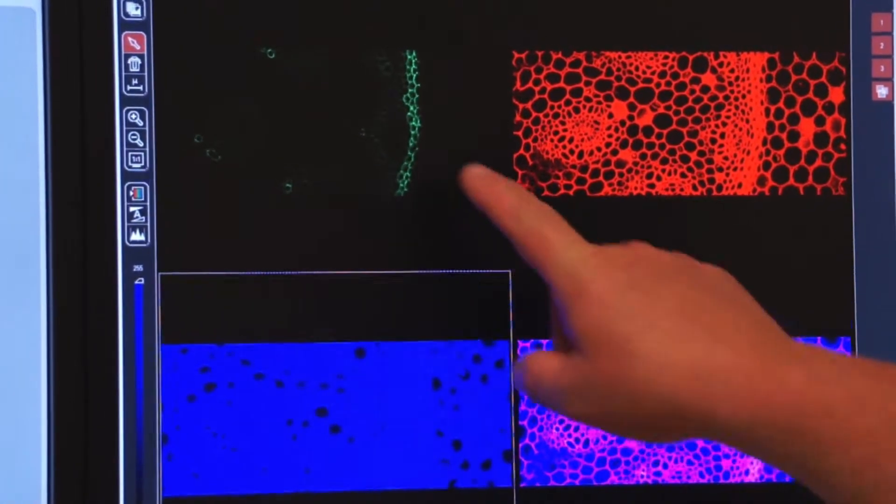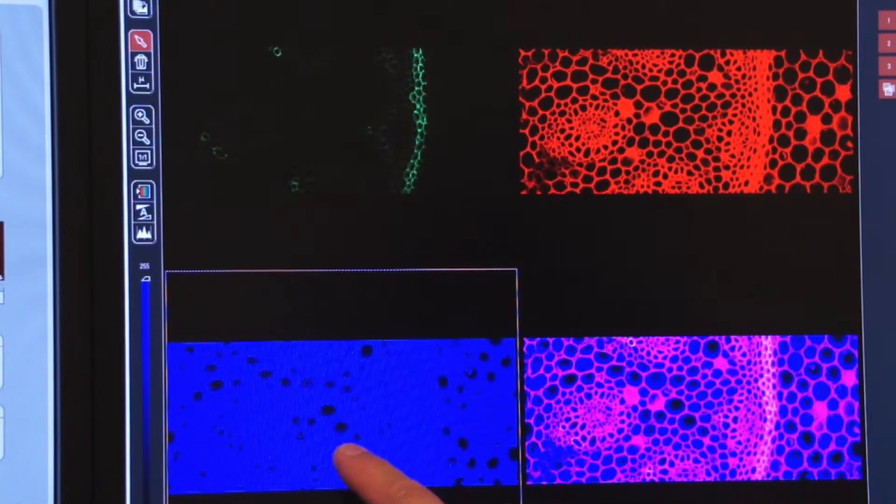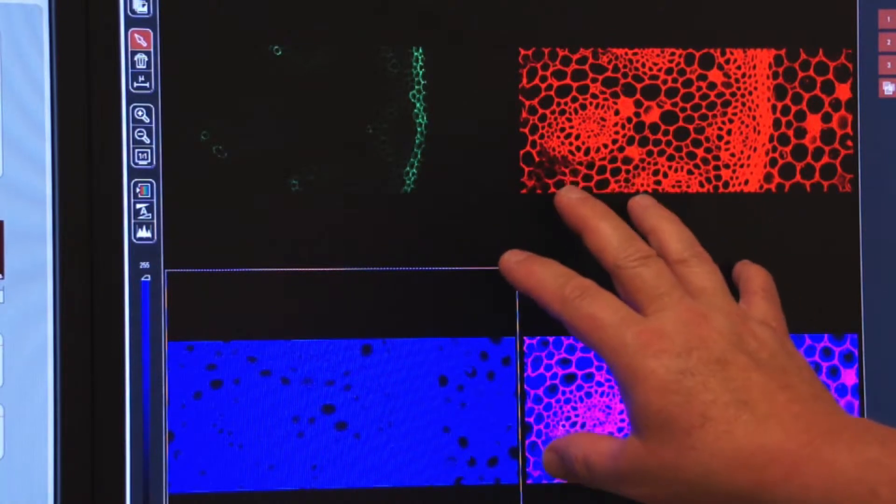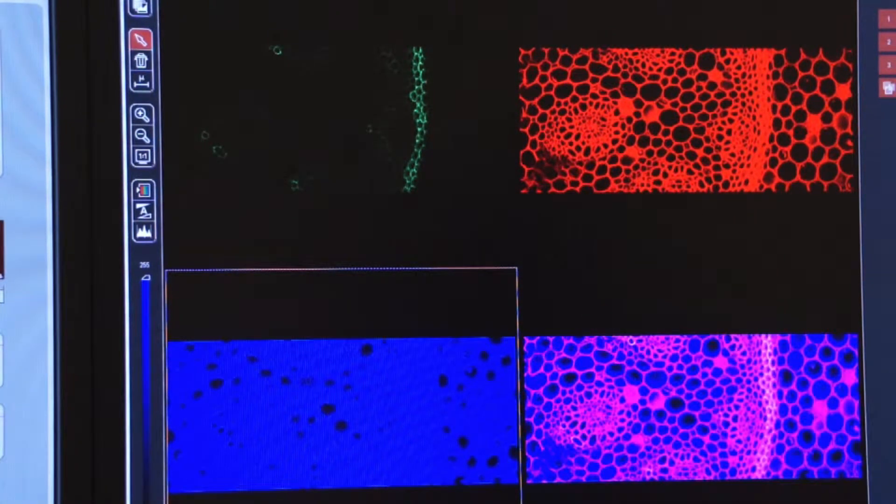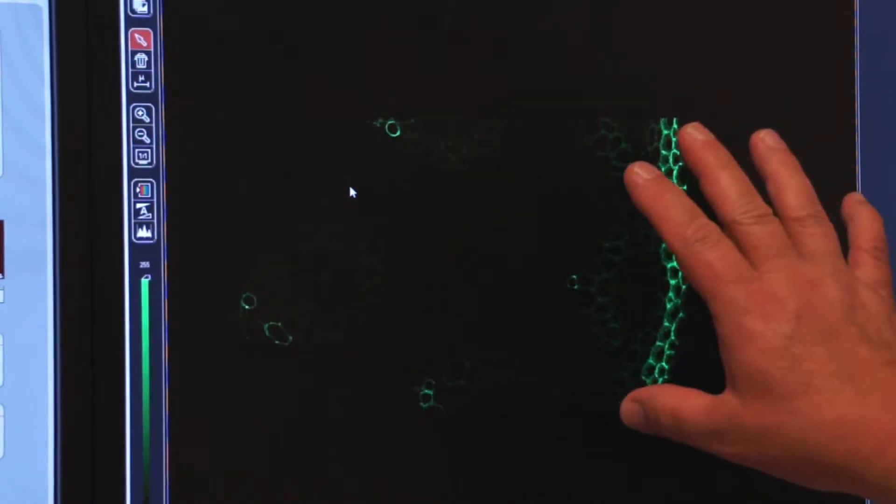The first one is the FITC, the second one is the TRITC, and this is the CY5. Again, we want to set our smart gain and offset for each of these windows. We'll click on the first one. If you double click, only that one comes up, and now we can increase our smart gain.